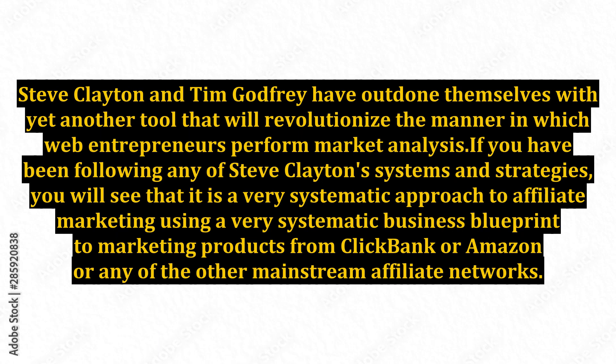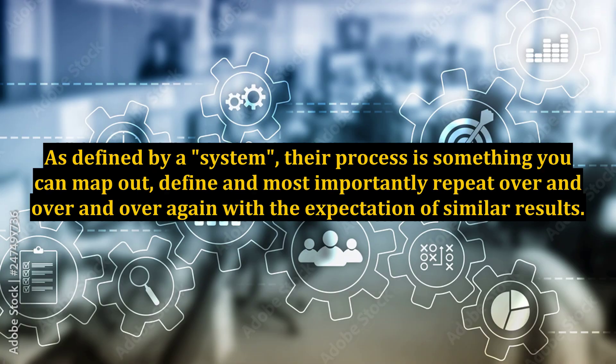If you have been following any of Steve Clayton's systems and strategies, you will see that it is a very systematic approach to affiliate marketing — using a very systematic business blueprint to market products from ClickBank, Amazon, or any of the other mainstream affiliate networks. As defined by a system, their process is something you can map out, define, and most importantly repeat over and over again with the expectation of similar results.